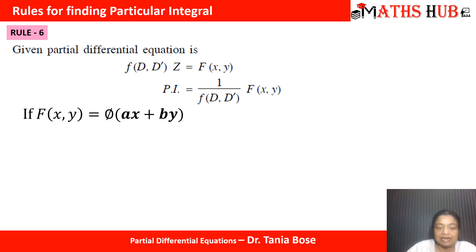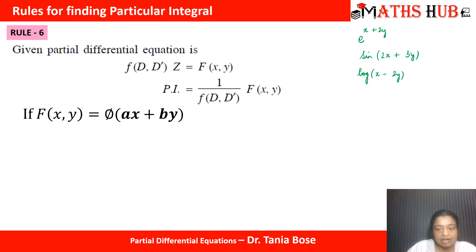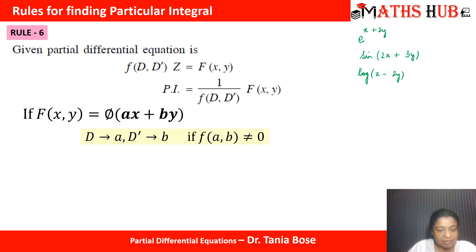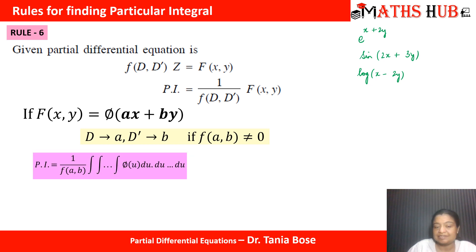In this case, our function is any function of the form ax plus by — I am writing it as phi(ax+by). For example, it can be e^(x+2y), it can be sin(2x+3y), or it can be log(x-2y). In every case we have the term ax plus by. So the first step is: replace D with a and D' with b, unless your denominator f(DD') becomes zero.